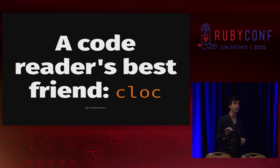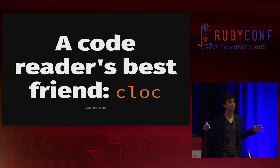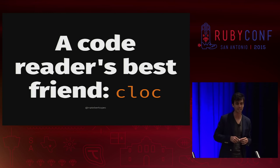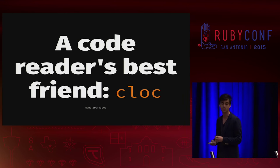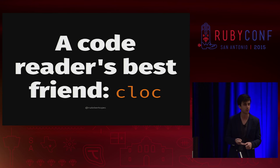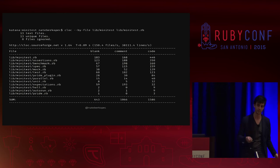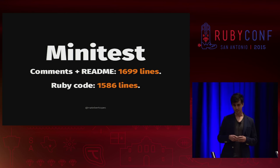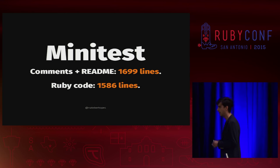Before we actually read a single line of code, I think you can learn a lot from a project's file structure and where its lines of code live. Before I dig into a library, one of the greatest things you can do is open up cloc — a little library for counting lines of code in a project. It's smart enough to break things out by file and by language. If we apply cloc to Minitest, Minitest has 1,699 lines of documentation and just 1,586 lines of Ruby code.